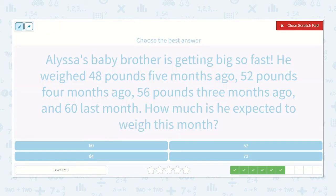Alyssa's baby brother is getting big so fast. He weighed 48 pounds 5 months ago, 52 pounds 4 months ago, 56 pounds 3 months ago, and 60 last month. How much is he expected to weigh this month? So 48, 52, 56, 60. Let's find the pattern.